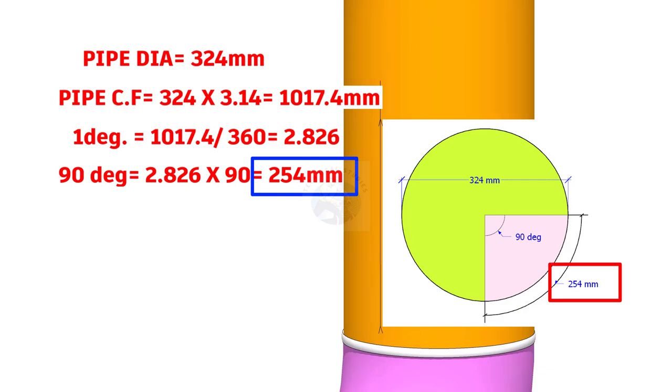This is the arc length for 90 degree in a 324mm diameter circle.